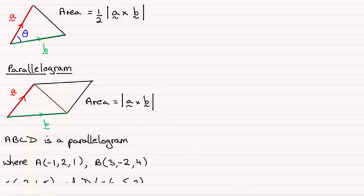Now I've got an example which you might like to have a go at, but I will run through the solution in a moment. We've got a parallelogram ABCD and the coordinates of A, B, C, D are respectively (-1, 2, 1), (3, -2, 4), (-2, 1, 5), and for D (-6, 5, 2). So you might like to find the area of that parallelogram.